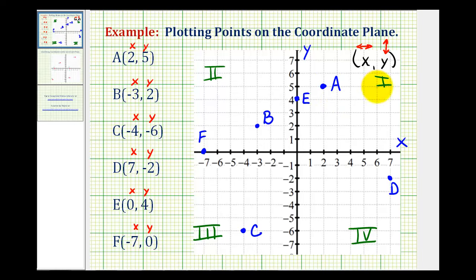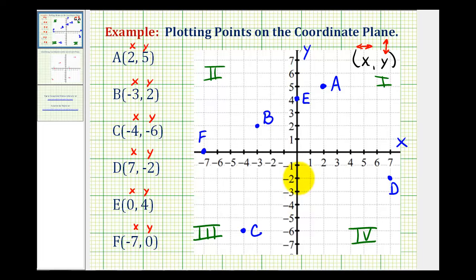So point A is in quadrant one, point B is in quadrant two, point C is in quadrant three, and point D is in quadrant four. Point E and F fall on the axes and therefore are not considered to be in one of the quadrants — point E is on the y-axis and point F is on the x-axis. I hope you found these examples helpful.